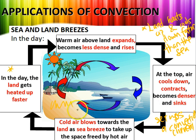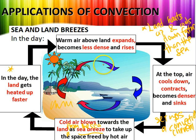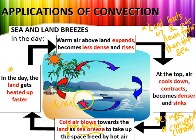As the cold wind blows towards the land from the sea, we term this as the sea breeze. Because it's blowing from the sea, that's why we call it sea breeze. The warm air above the land expands, becomes less dense and rises. The cooler air at the top contracts, becomes denser and sinks, setting up the convection current. The cold air blows from the sea to the land — that's why we term this the sea breeze.